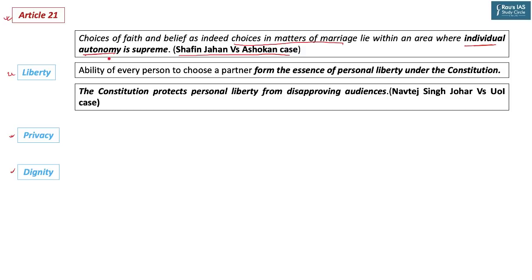Individual autonomy is supreme, meaning it is given preference over social conformity. In Navtej Singh Johar versus Union of India, the Supreme Court said the Constitution protects personal liberty from a disapproving audience. This idea was reiterated in the Sabarimala judgment. In all these cases, the Supreme Court puts individual rights and liberty before social demands of conformity. In the Hadiya case, the court concluded that the ability to choose a partner forms the essence of personal liberty under the Constitution.